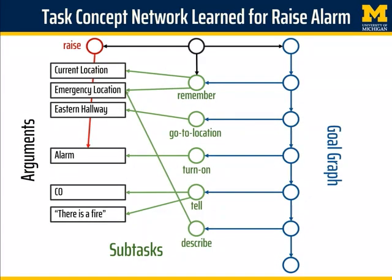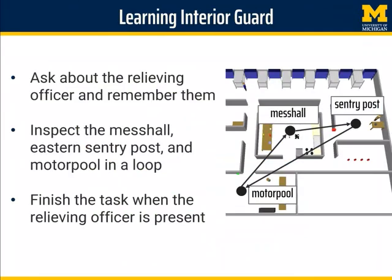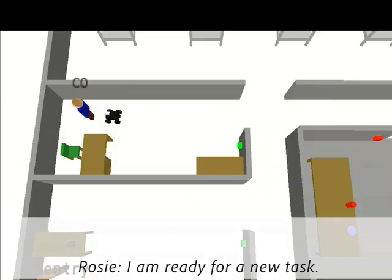Now Rosie is ready to learn the full interior guard task, which includes asking about and remembering a specific person as the officer to relieve them, and then doing a repeated patrol route of several locations until that person is present. Along the way, Rosie will use the task knowledge learned earlier, such as how to inspect a room.